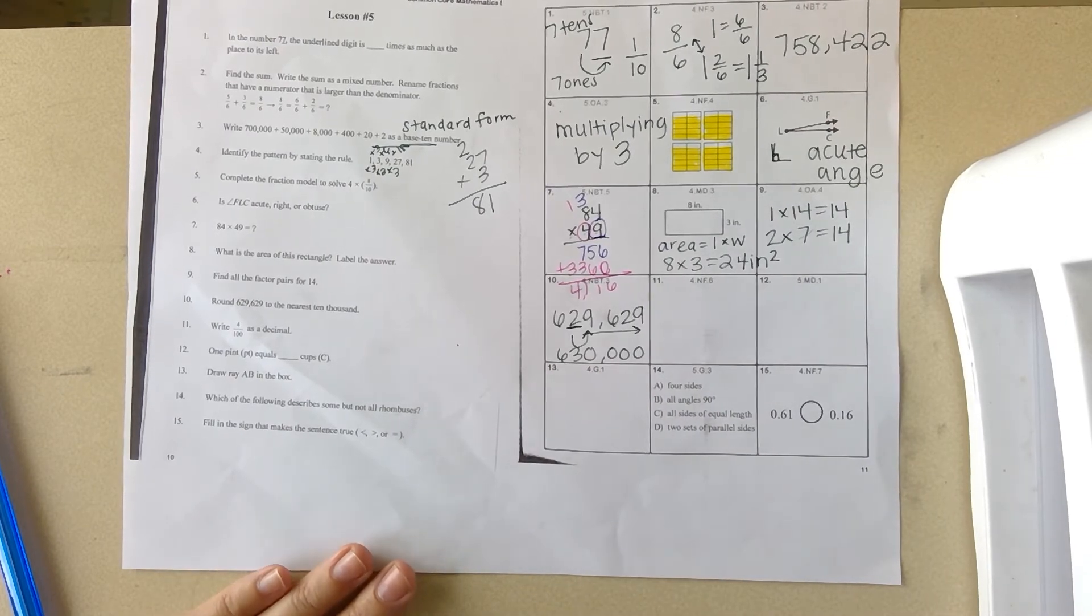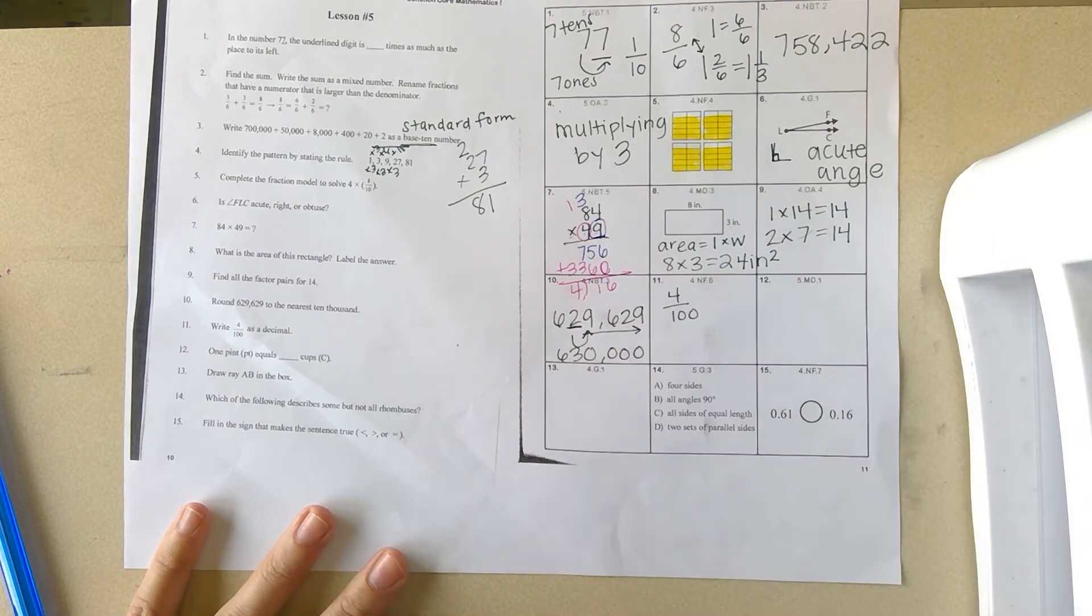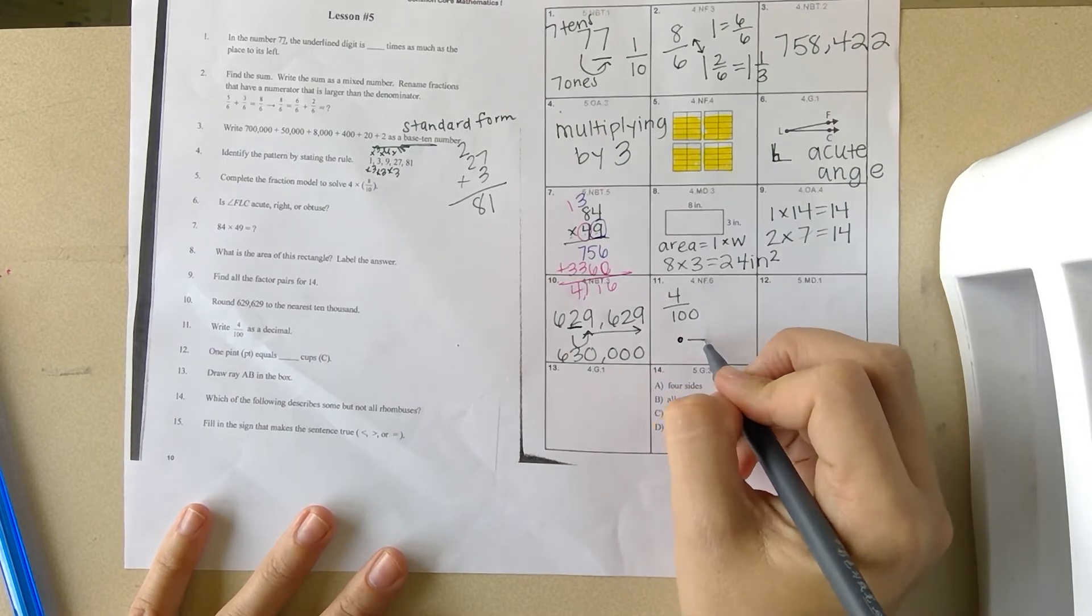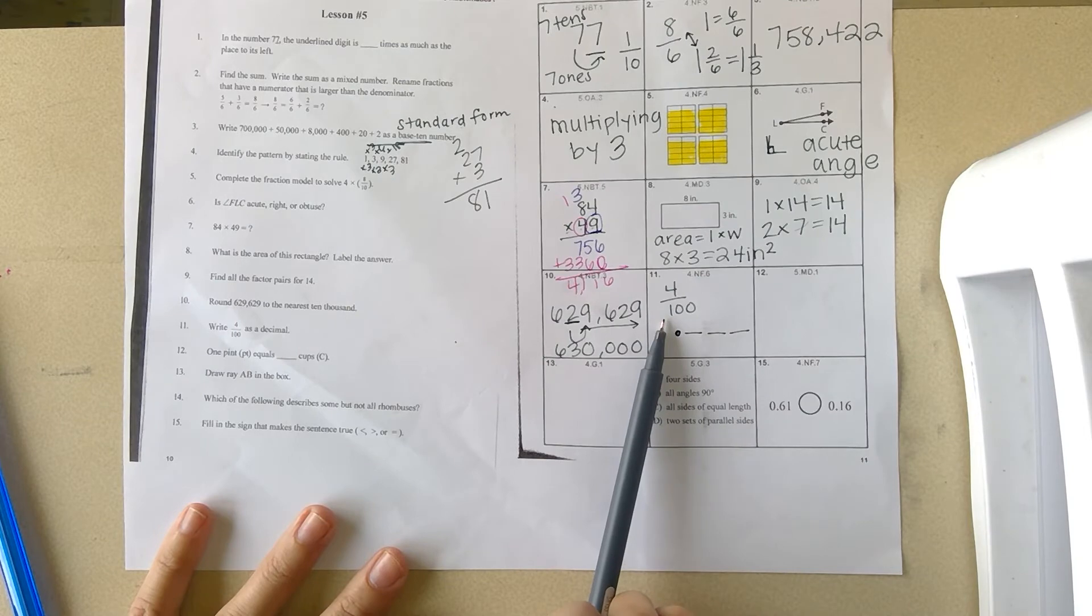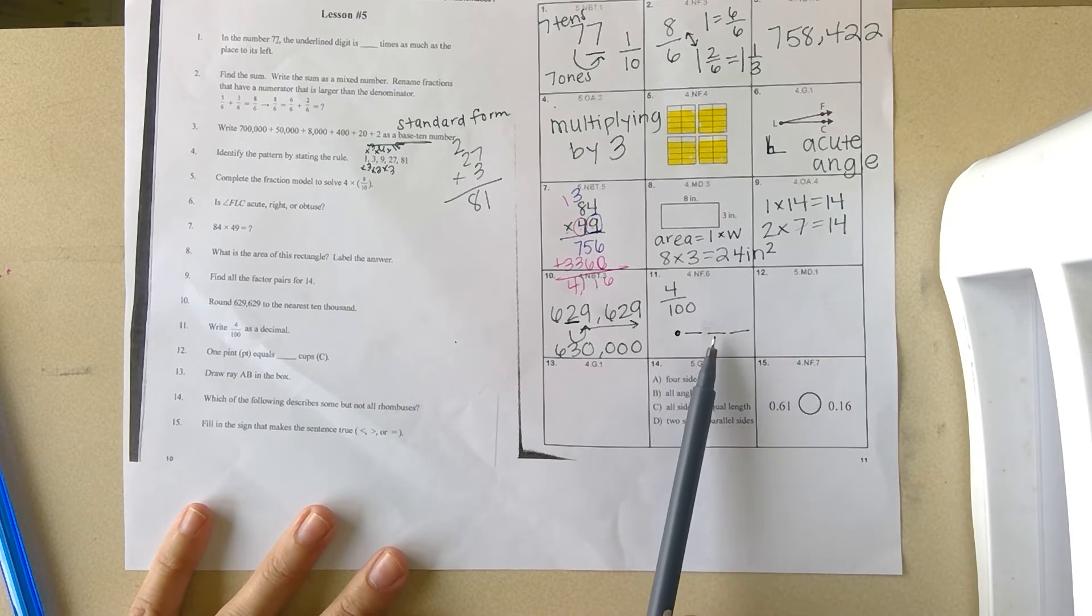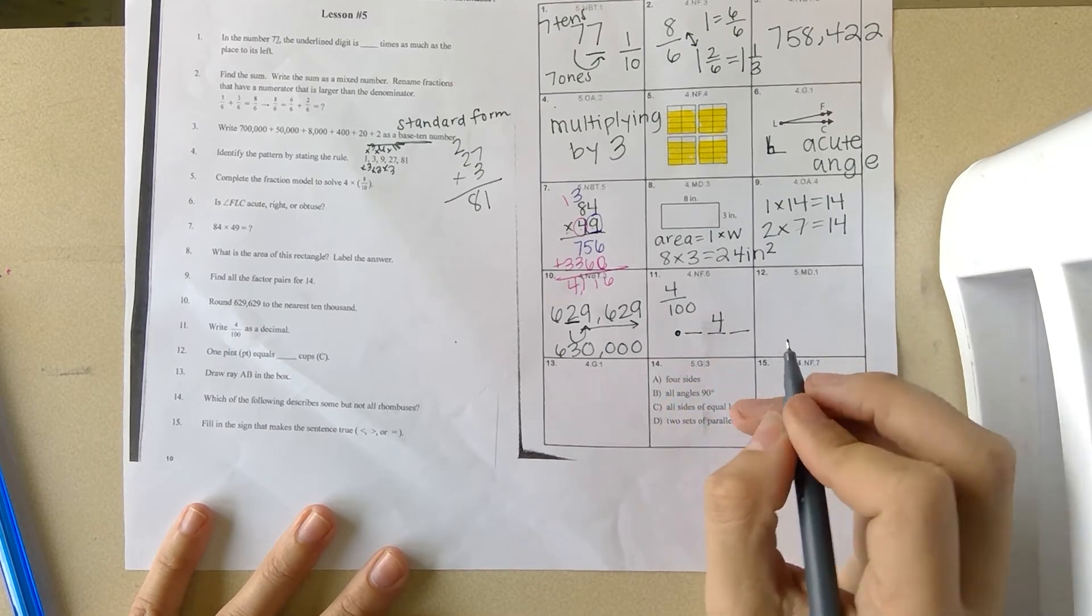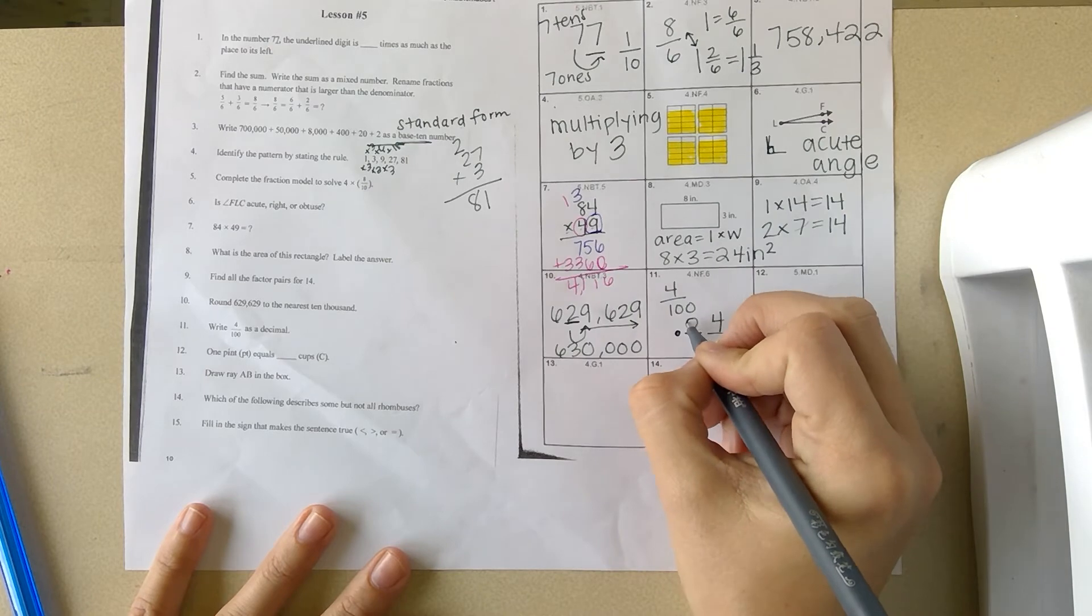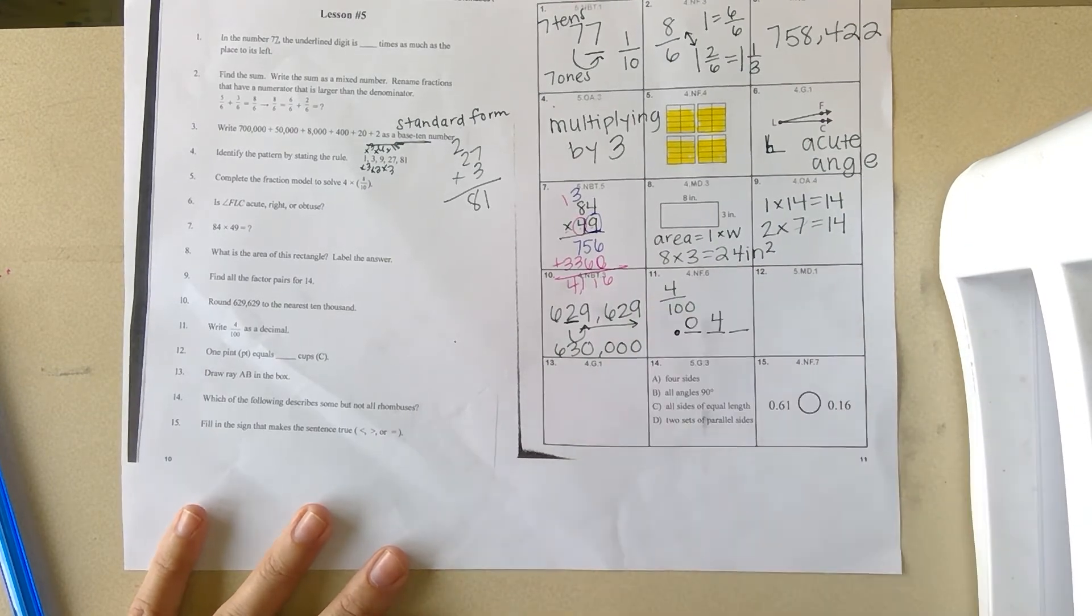Number eleven: write four-hundredths as a decimal. What would four-hundredths be as a decimal? We'll have our decimal point. We have tenths, hundredths, thousandths. This is four-hundredths. The 4 will go into our hundredths. We can't leave this blank because then I would think that would be in the tenths, so we put a zero there. This decimal here shows four-hundredths.